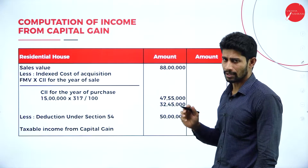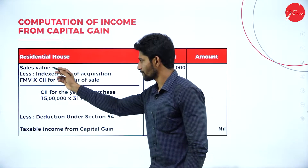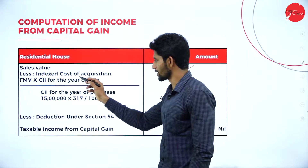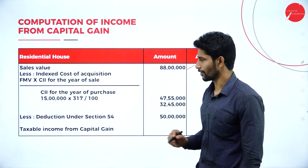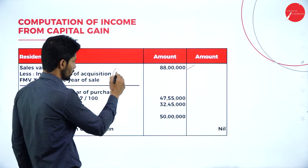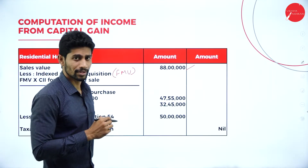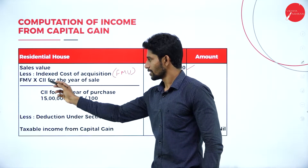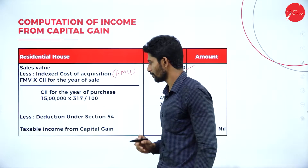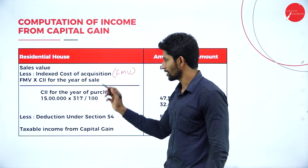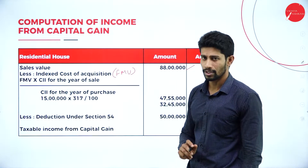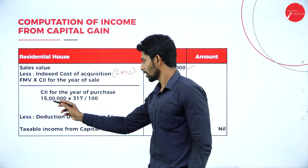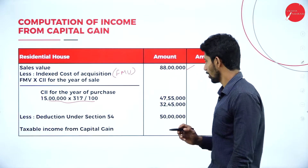Now solving Problem 5 — Computation of Income from Capital Gain. Sales value: rupees 88 lakhs. Less indexed cost of acquisition, calculated based on fair market value since CII is available from 2001-02. Formula: fair market value × CII for year of sale ÷ CII for year of purchase = 15 lakhs × 317 ÷ 100, which gives rupees 47 lakhs 55,000.